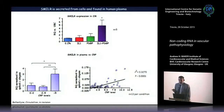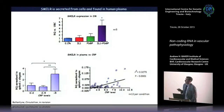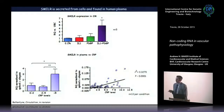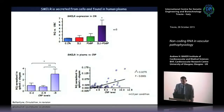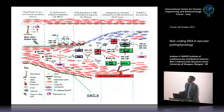SMILR appears upregulated in unstable plaque where it also co-regulates HAS2, suggesting importance in human vascular pathology. Interestingly — though this is very early data — SMILR is also secreted into conditioned media in response to IL-1 and PDGF, and it circulates in serum. In about 13 patients per group, higher levels of circulating CRP correlate with higher levels of circulating SMILR lncRNA, suggesting it may also be a useful biomarker.